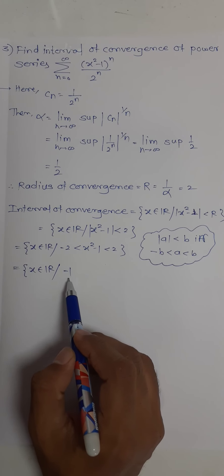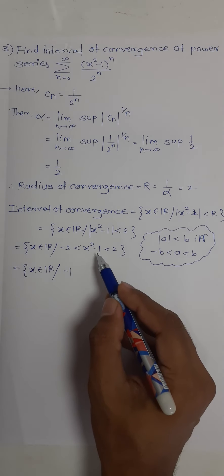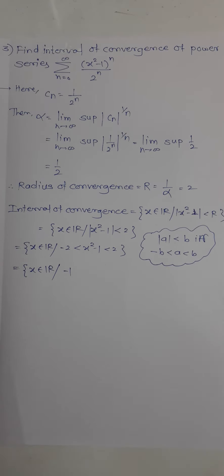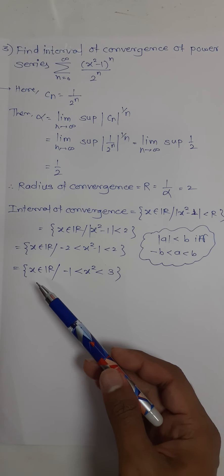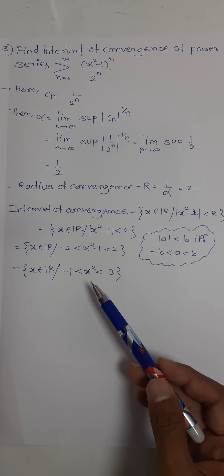If you add 1 to minus 2, you get minus 1. Add 1 here, minus 1 and 1 cancel, so you have x squared only. Add 1 to 2, you get 3. So we need x that satisfies this condition.